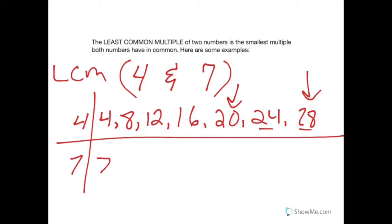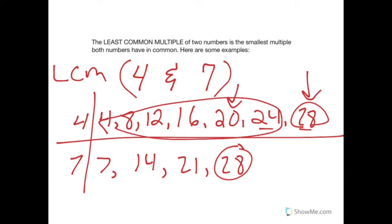Start below. Seven. Fourteen. Twenty-one. Twenty-eight. Okay. Both four and seven have twenty-eight as a multiple. That is a common multiple. Since none of the other numbers that you see listed here are common multiples, the least common multiple, the smallest multiple they have in common, is twenty-eight. So, in this case, the least common multiple of four and seven is twenty-eight.